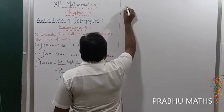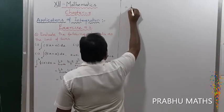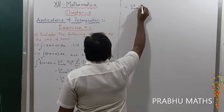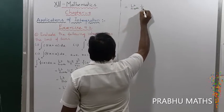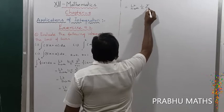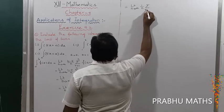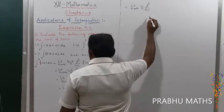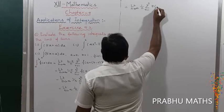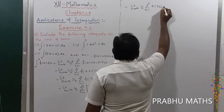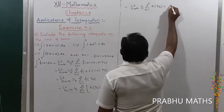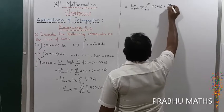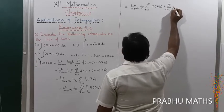So this equals limit as n tends to infinity of 1 by n, times [summation of r from 1 to n of 5(r by n), plus summation of r from 1 to n of 4].